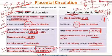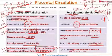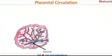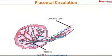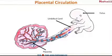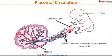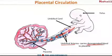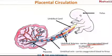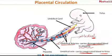The blood in the villi is carried to and from the fetus through the umbilical arteries and umbilical veins. The umbilical cord consists of three vessels: two umbilical arteries and one umbilical vein. Opposite to general convention, the umbilical arteries carry deoxygenated blood from the fetus to the placenta for oxygenation, while the umbilical vein carries oxygenated blood from the placenta back to the fetus.